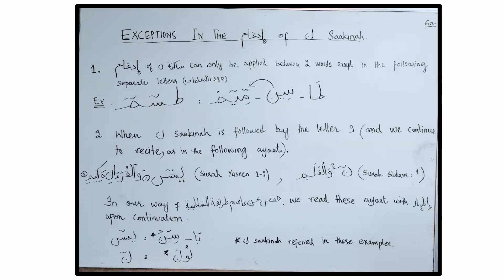There are some exceptions in Idgham of Noon Sakina. As discussed, Idgham of Noon Sakina does not happen in one word — even if we have the conditions of Idgham in one word, we do Idhar. However, there is one exception: in the Huruf al-Muqatta'at, the word Qaf-Seen-Meem — when written out as Qaf, Seen, Meem — Noon Sakina is followed by letter Mim, a Yermalun letter, so we do Idgham here. We completely merge Noon Sakina into Mim (Idgham Kamil) and recite: Qaf, Seen, Meem.